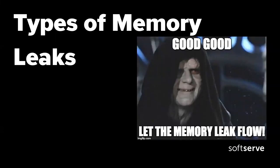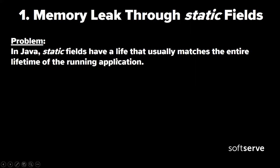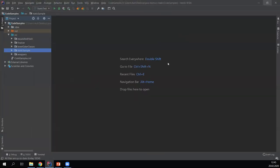This is the second, more practical part of the presentation. Here we will discuss the main types of memory leaks, some bad coding practices that can produce them, and we'll find a solution for each case. The first scenario is memory leaks through static fields. In Java, static fields have a lifetime that usually measures the entire lifetime of the running application, unless the class loader becomes eligible for garbage collection.